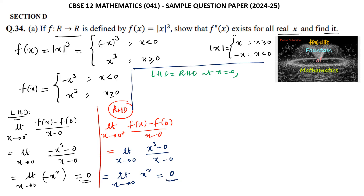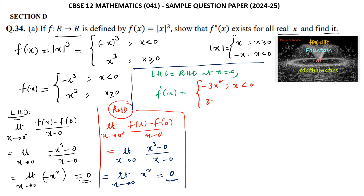So f'(x) exists, and we can write: f'(x) = -3x² when x < 0, and f'(x) = 3x² when x ≥ 0.